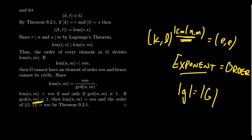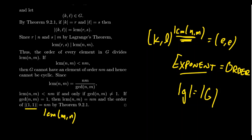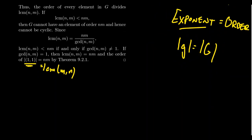When the GCD equals 1, the LCM of N and M equals NM, so the exponent and order are the same. In particular, from the previous video, the order of the element (1, 1) equals the LCM of N and M — so when GCD(N,M)=1, the element (1,1) has order equal to the order of the whole group, meaning the group is cyclic. These two quantities are equal precisely when the GCD is equal to 1.